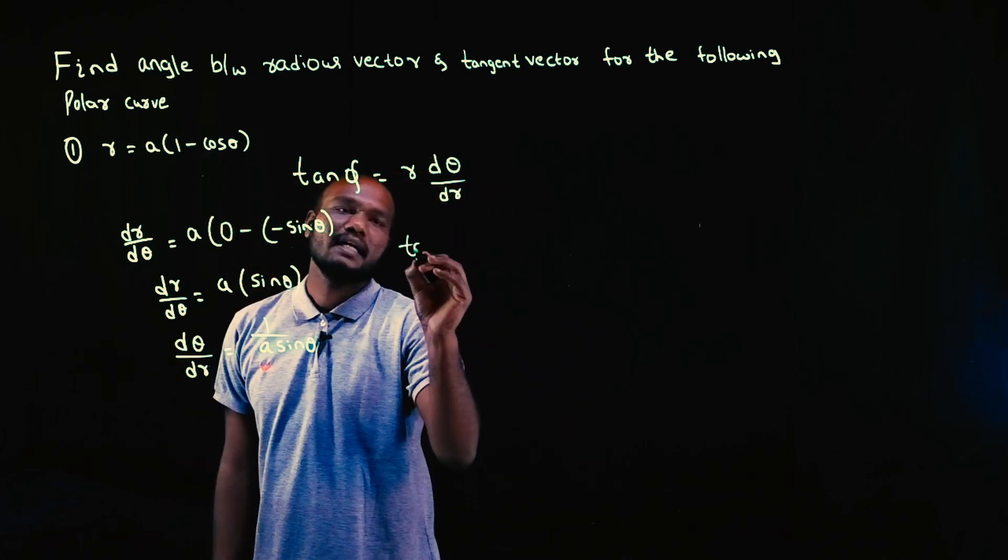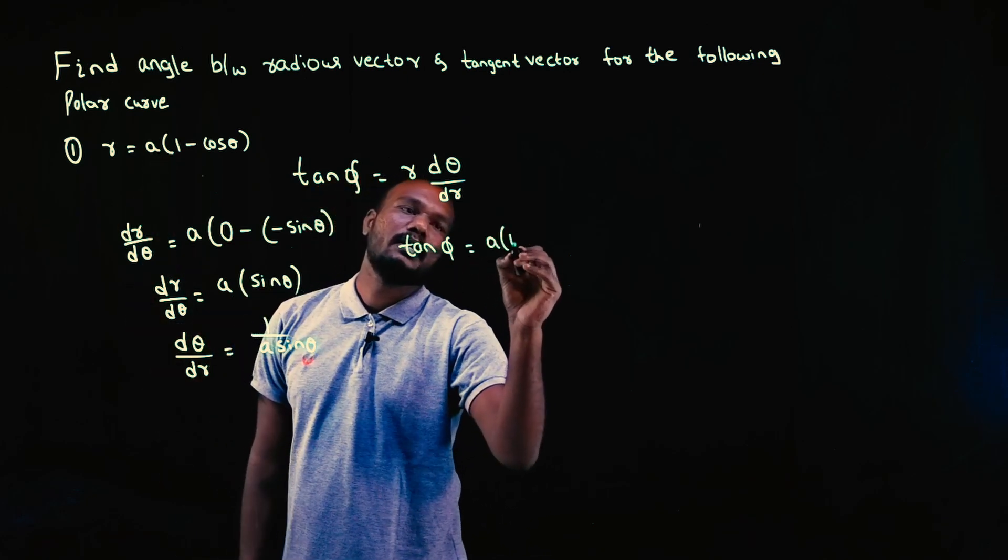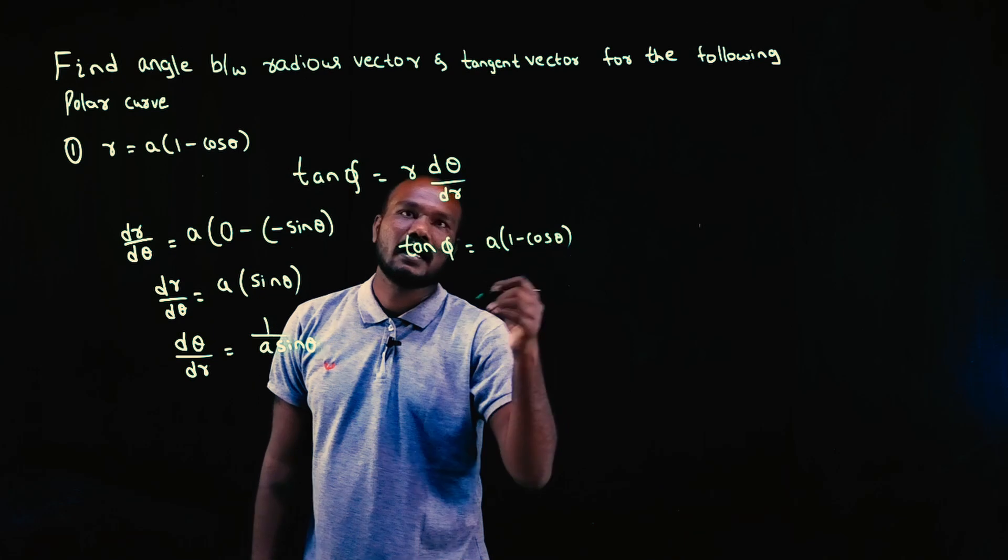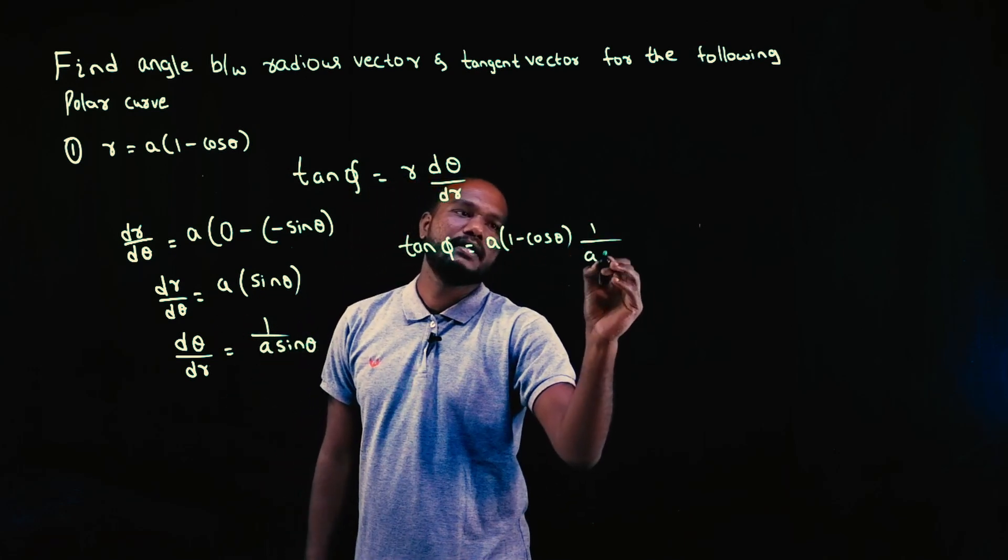So let's substitute. So tan φ is equal to r. What is r? A into 1 minus cos θ. This is r. What is dθ by dr? dθ by dr is 1 upon a into sin θ.